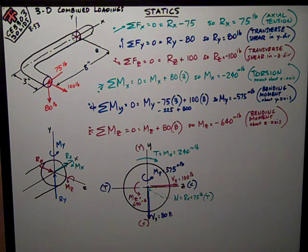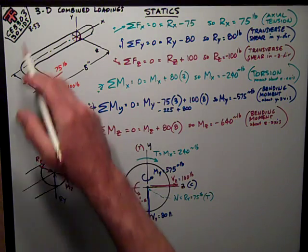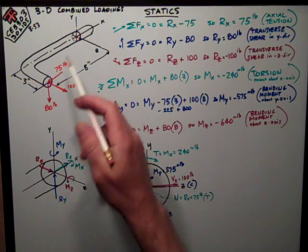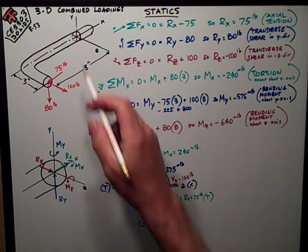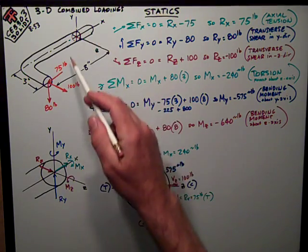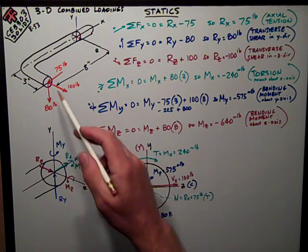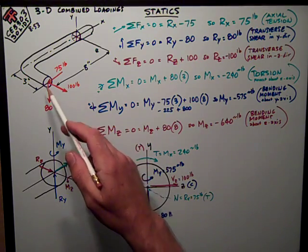I'll do a brief thing on three-dimensional combined loadings. I'm using a problem from the Hibbler book 853. This is a bent rod sticking out of the wall, and it's got three loads on it as shown here.